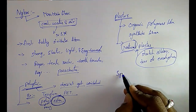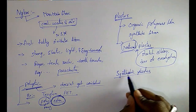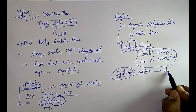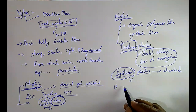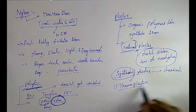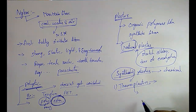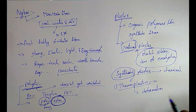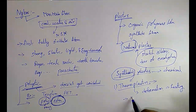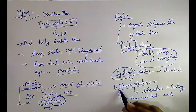In the case of synthetic plastics, they are made up of chemical compounds or chemical substances. These are also two types. The first one is thermoplastics — these are plastics which get deformed easily on heating. They can be bent easily by heating. Examples of thermoplastics are polyethylene (polythene), PVC, and teflon.